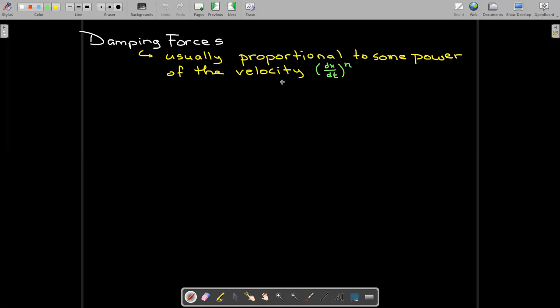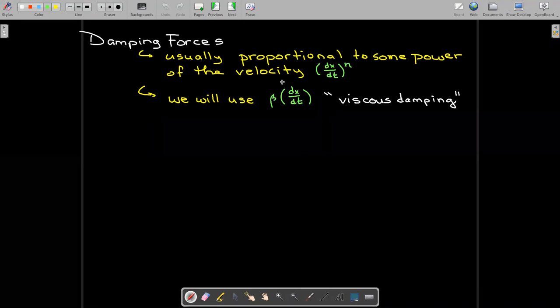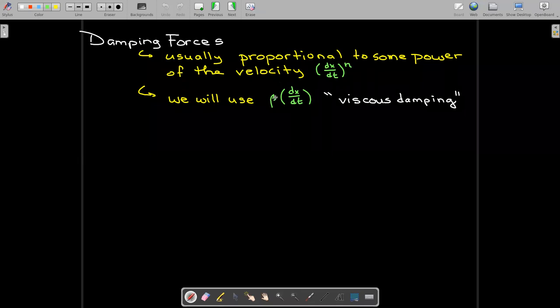Damping is actually very difficult to model correctly. The usual assumption in some cases is that it is proportional to some power of the velocity, and for our case we're just going to assume that it's proportional to the velocity raised to the power of one. This is referred to as viscous damping. So our beta is just a constant of proportionality.